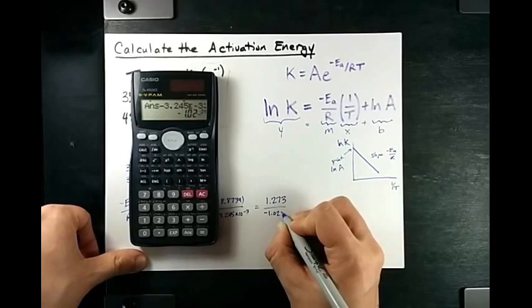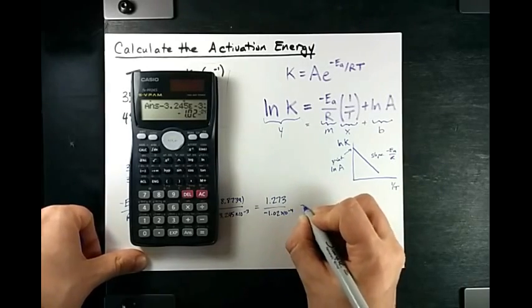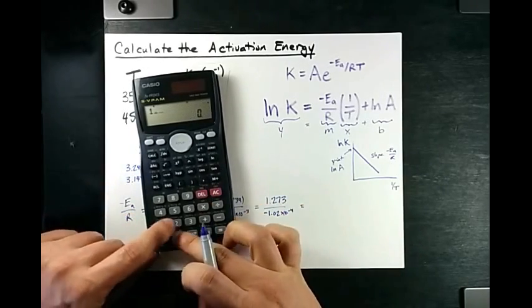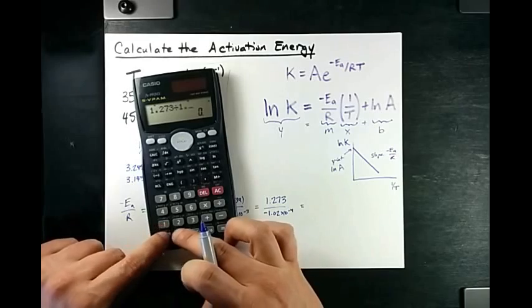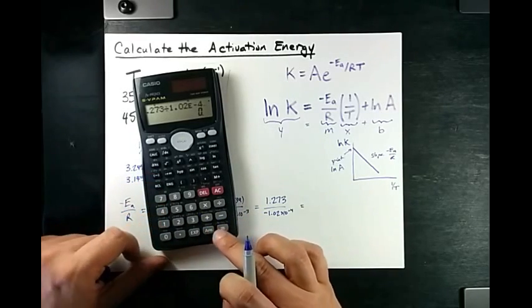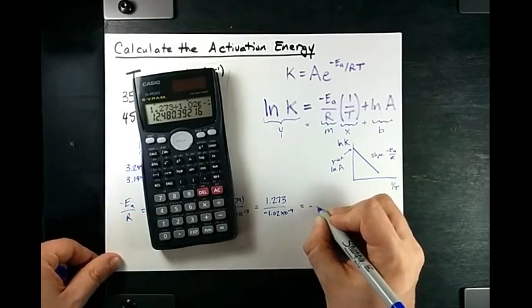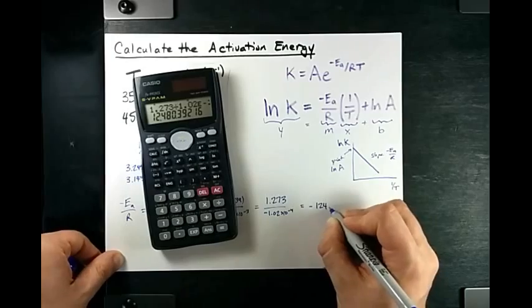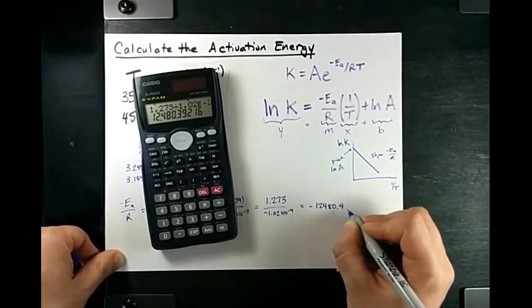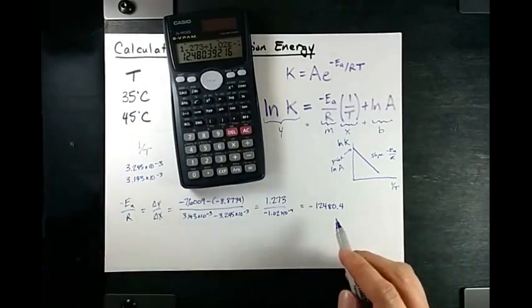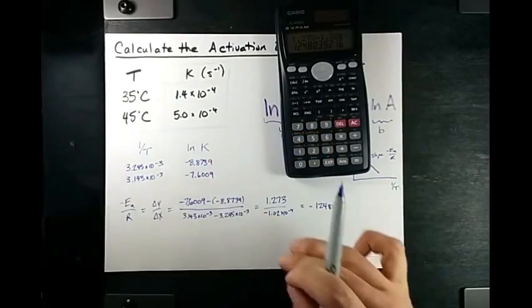When I divide those two numbers, I get negative 12,480.4. All right, so that's my slope between these two points.